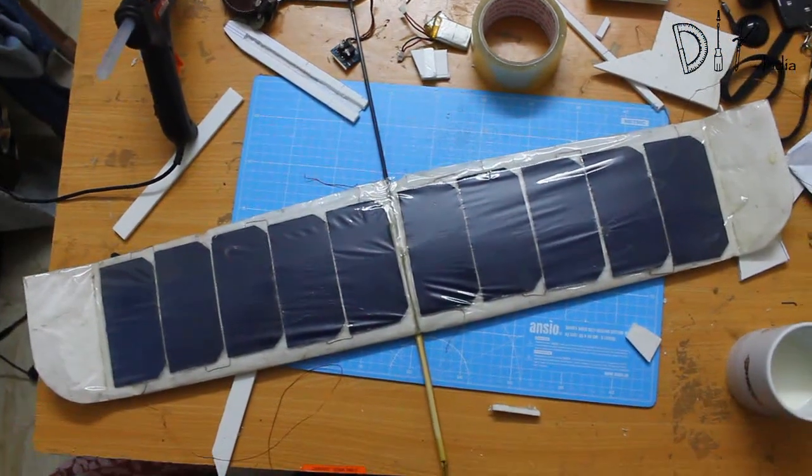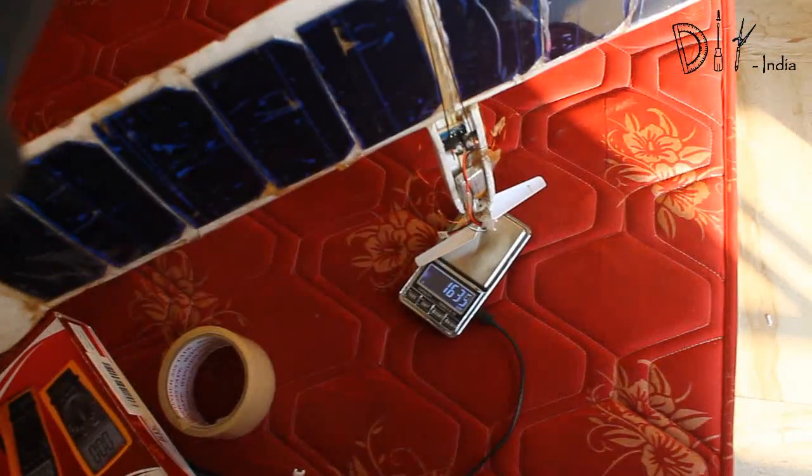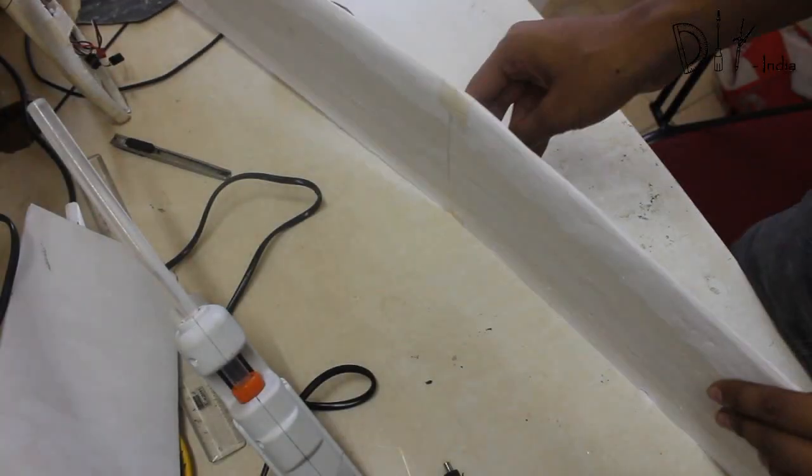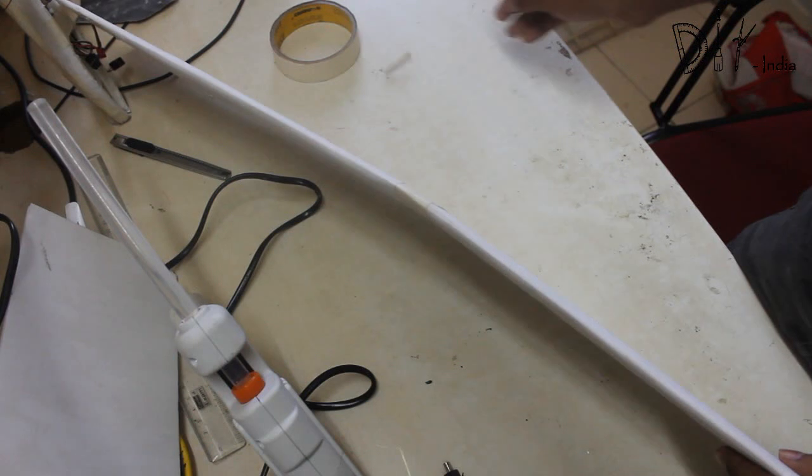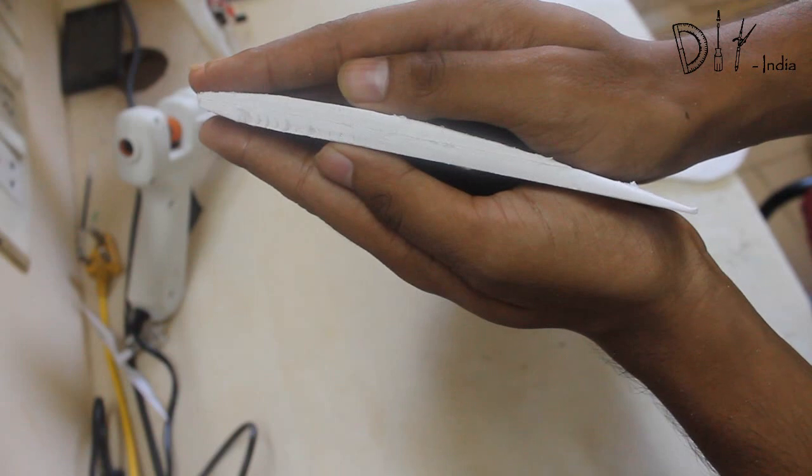So here we can use solar cell. The plane has wingspan of 78 cm and flying weight of 160 grams. Here polyhedral is also applied so that we can avoid ailerons. Airfoil section is also improved compared to previous design.